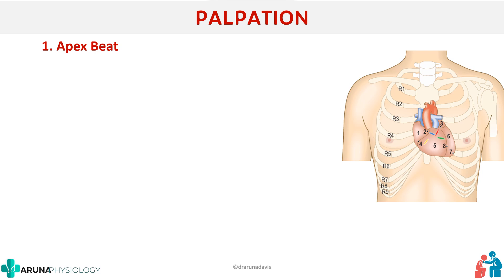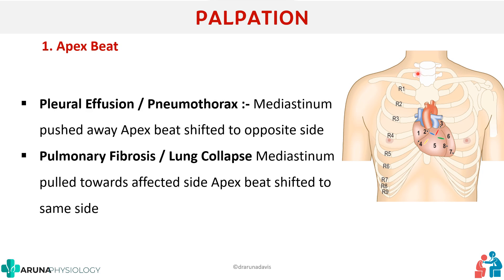We check the apex beat position because it can shift in various conditions. In pleural effusion or pneumothorax, the mediastinum is pushed away, so the apex beat shifts to the opposite side. In pulmonary fibrosis or lung collapse, the mediastinum is pulled toward the affected side, so the apex beat shifts to the same side. These are two major conditions in which the apex beat can be shifted.